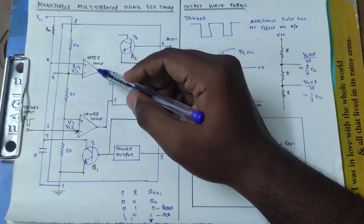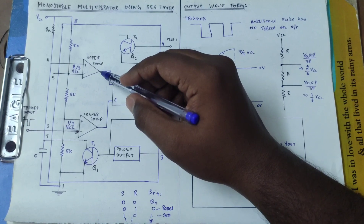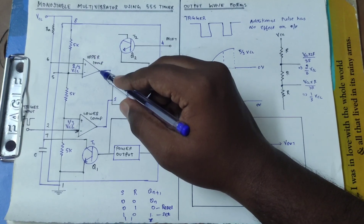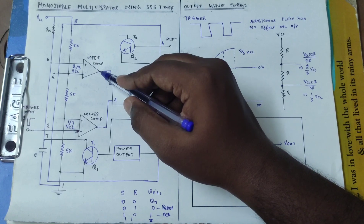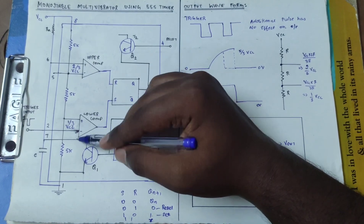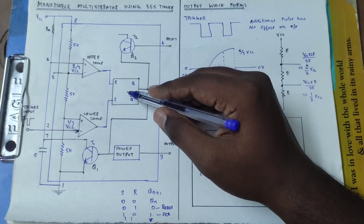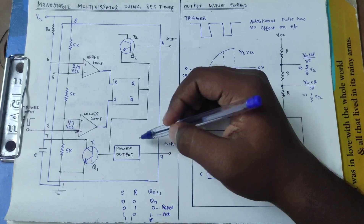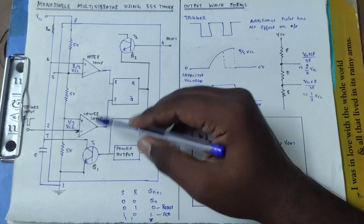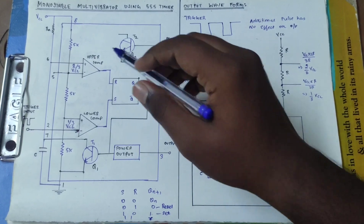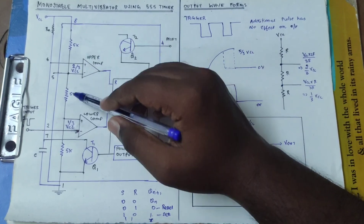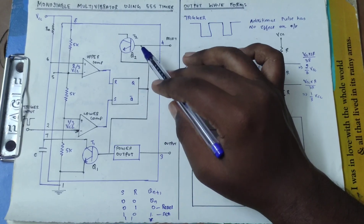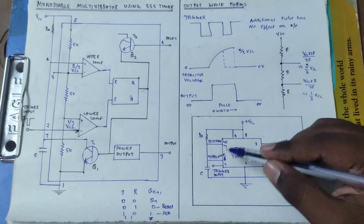The upper comparator and the lower comparator — what are the 2 inputs? You should compare the output. Next, the SR flip-flop. This is the storage element. The next link is the transistor T1, T2. This is a 3-resistor. This is the 555 timer.